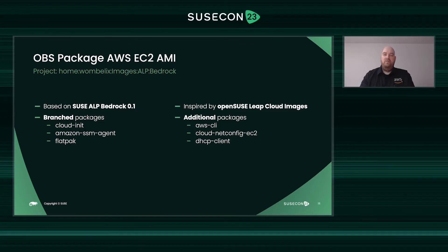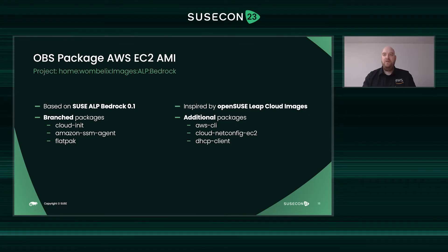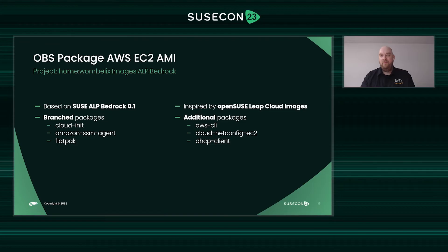I know that SUSE is using Ignition, Combustion, and Afterburn to perform the first-boot configuration, and it looks like that would also work with AWS. But for my first version I decided to go with the classic cloud-init package and approach, which is used in most AMIs — even the official ones. Amazon SSM Agent is necessary to interact with Amazon Systems Manager, which I'll talk about a little later. And last but not least, Flatpak — that was mainly out of personal interest to see if it would work and might be an additional option to run applications on top of ALP compared to classic OCI-compliant containers.